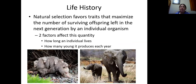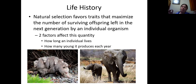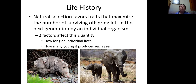Let's talk about life history traits and how they influence populations. Natural selection always favors traits that maximize the total number of offspring an individual leaves. There are two things that influence reproductive success: you have to survive and you have to reproduce. You could live a long time and have no kids — like me, I have a fitness of zero because I have no offspring. Or you could be a very fecund individual, like a male deer with a great rack, but if you die before you get a chance to reproduce, you'll also have low fitness. So you have to both survive and reproduce.